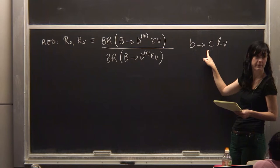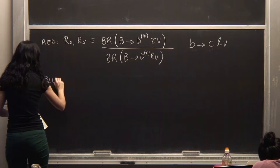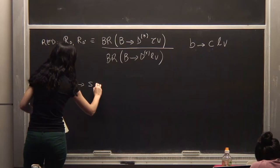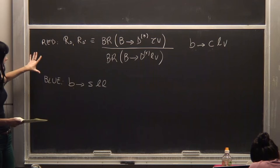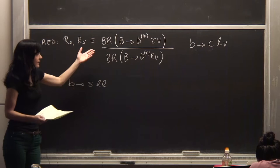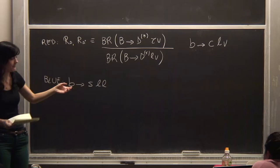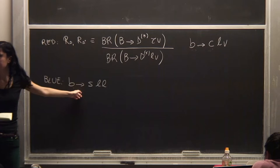This is the flavor transition we are looking at. As you can see, we're speaking about the charged current — we are changing the electric charge of the quark involved in the transition. In blue, instead, we're speaking about a different type of flavor transition: a bottom quark going to a strange quark, lepton, and anti-lepton. Theoretically, there are attempts to solve both of them, but from the theoretical perspective, these two observables are not necessarily related, because one is a charged current and the other is a neutral current.